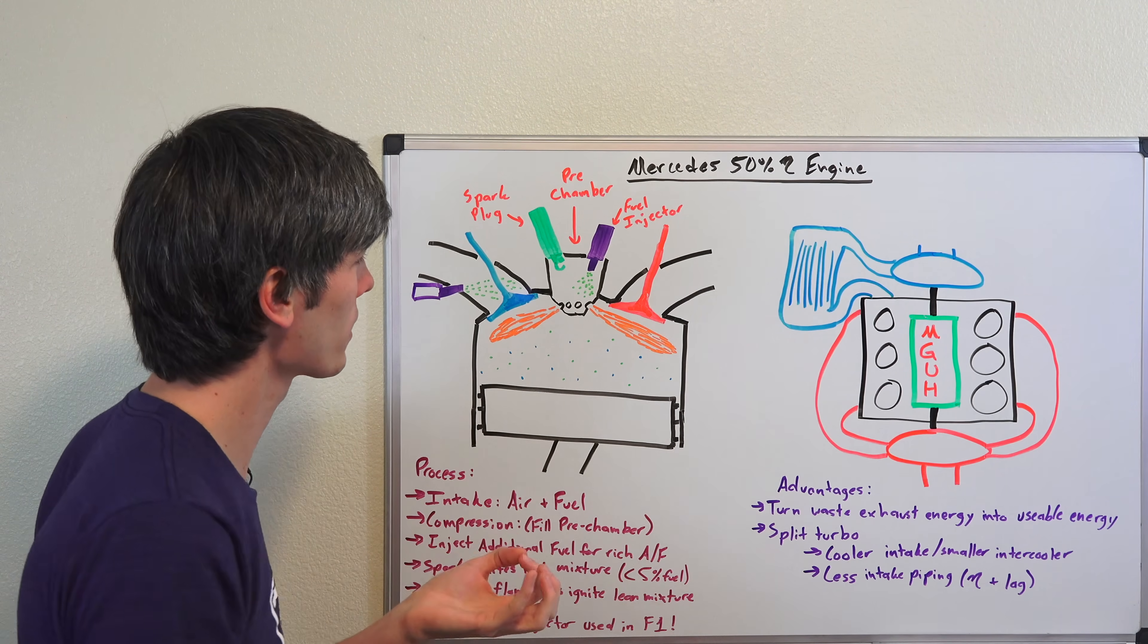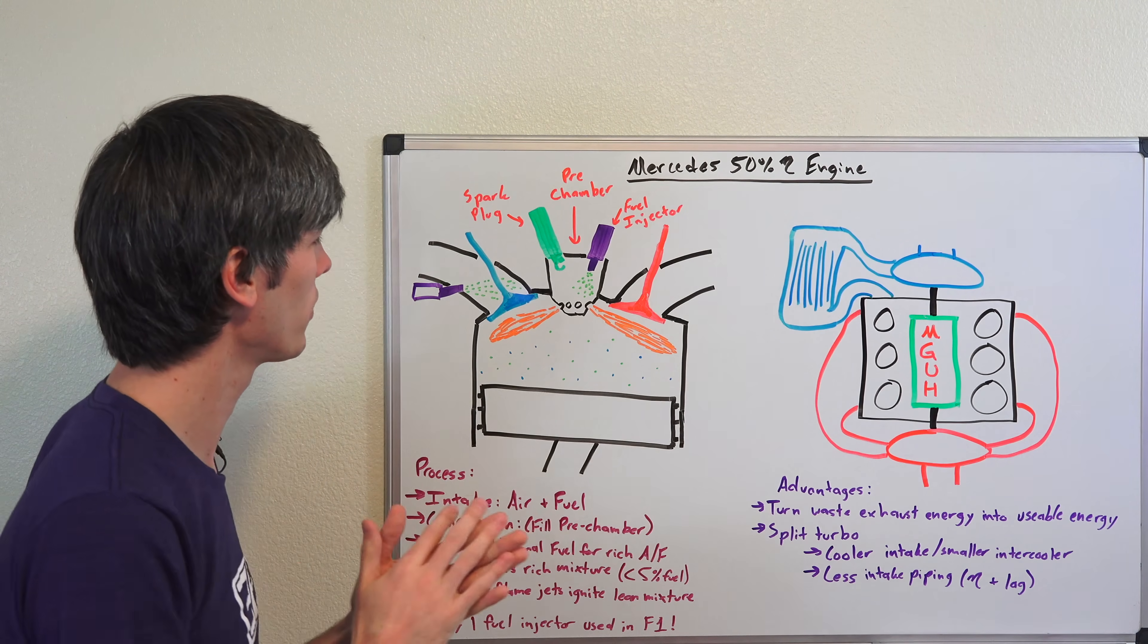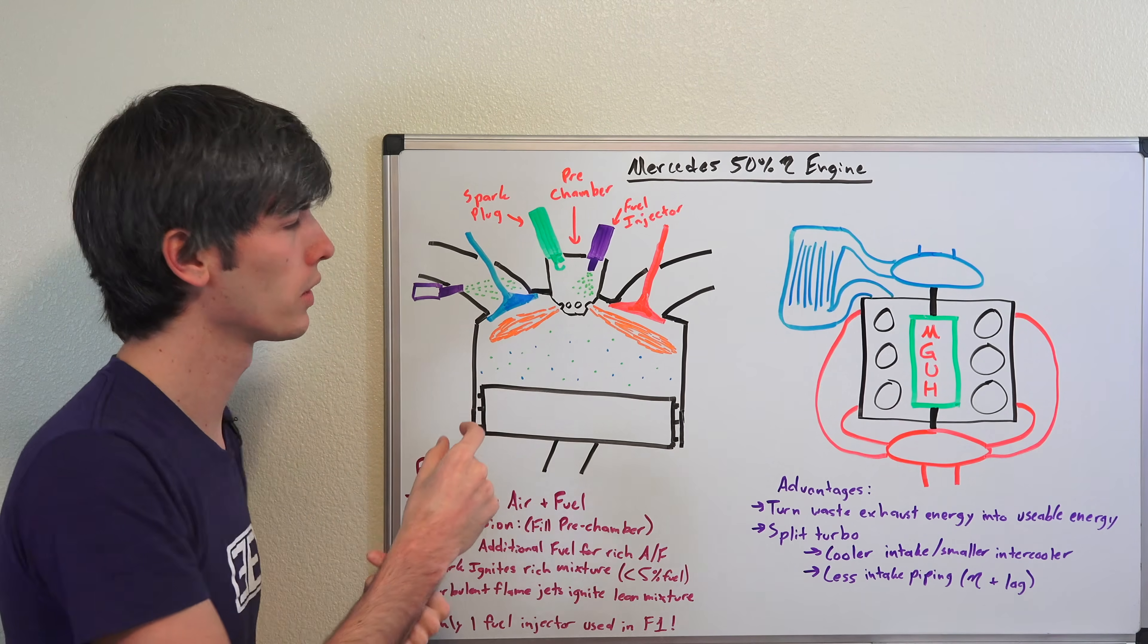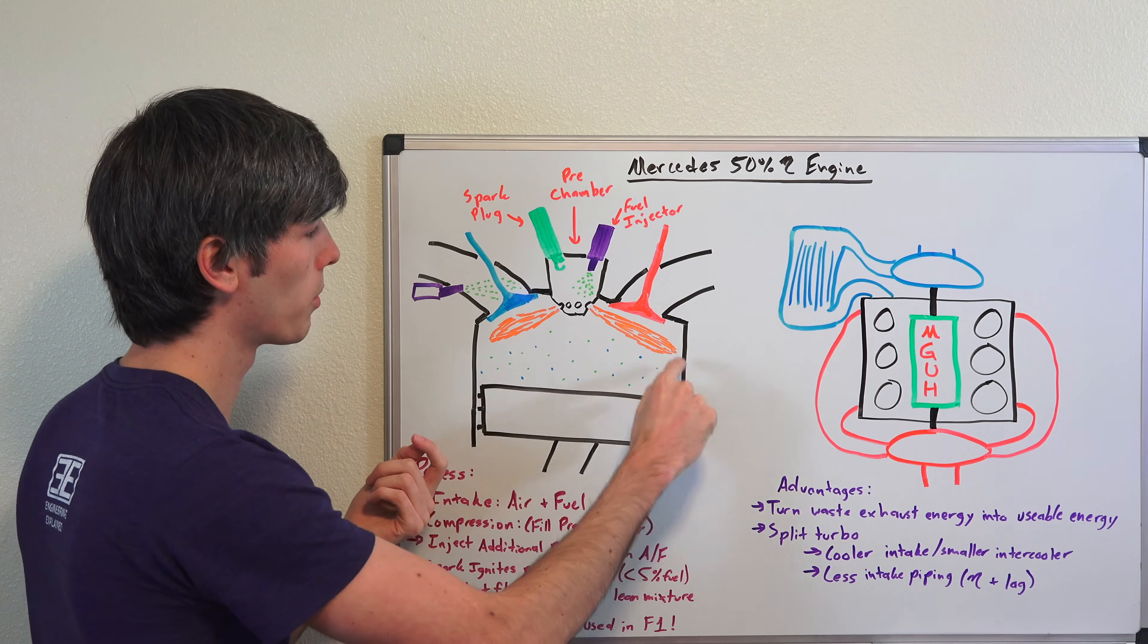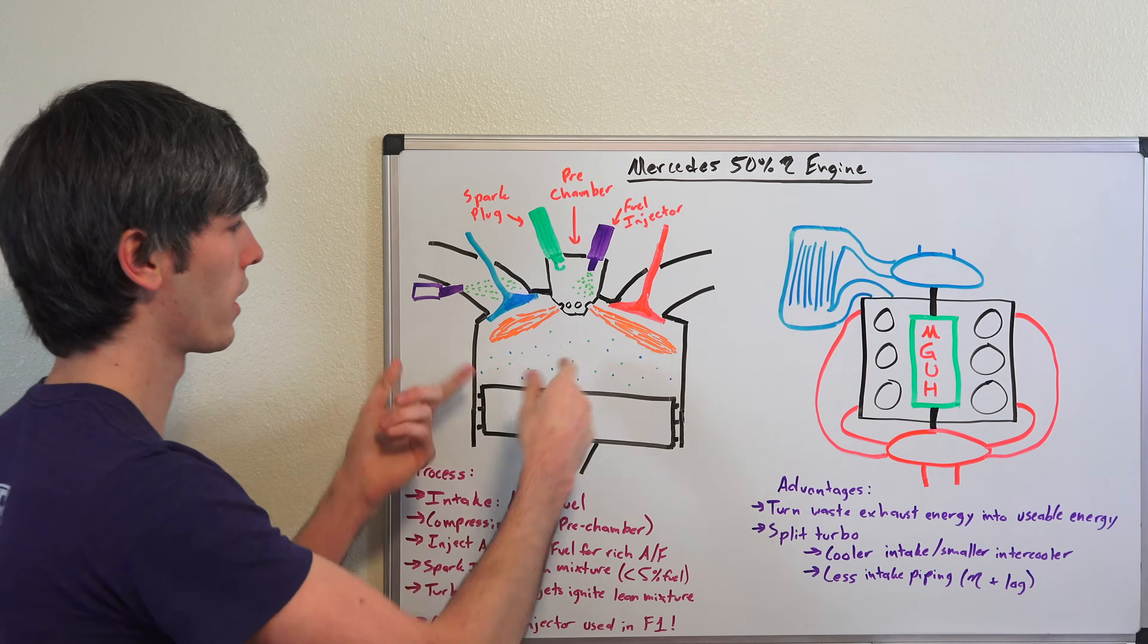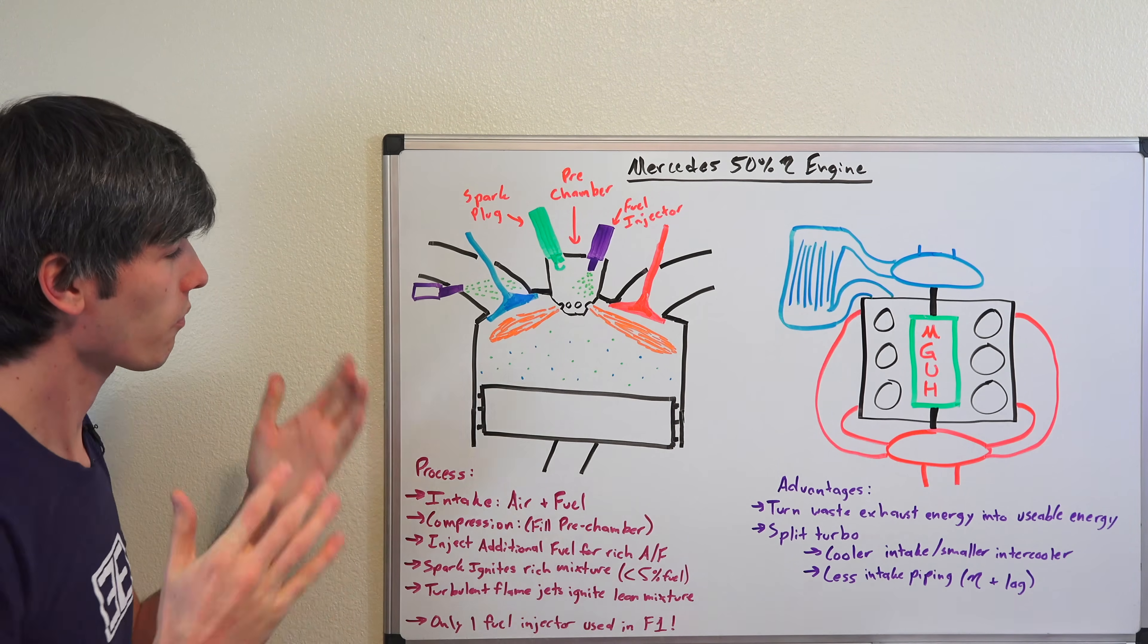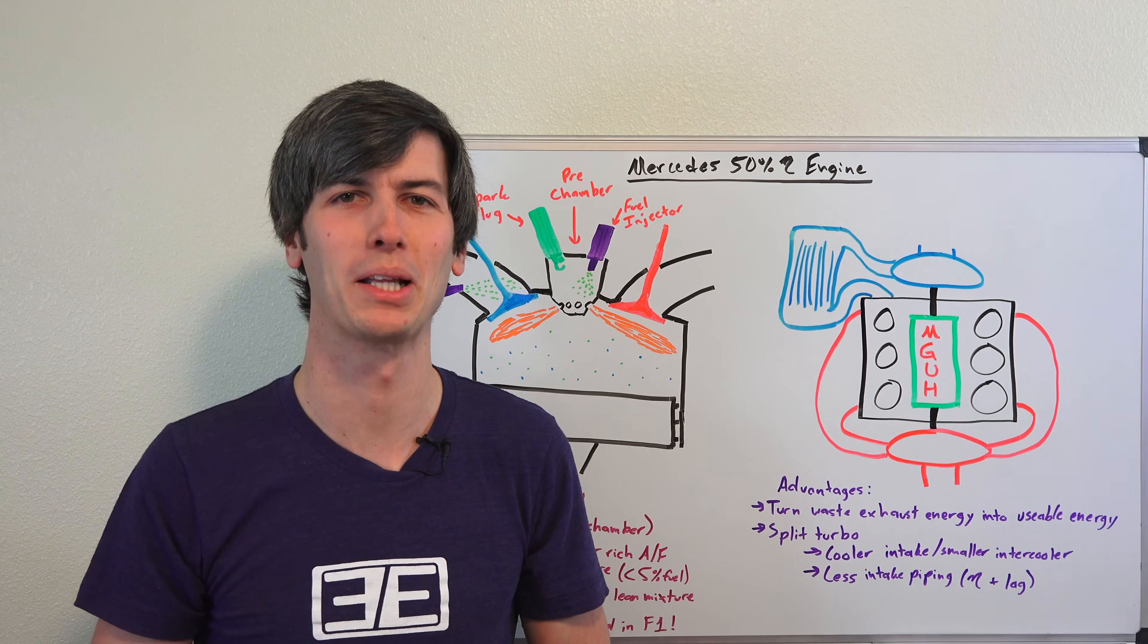But either way, that's one of the tricks of Formula 1, some of the things that go on behind the scenes that we don't exactly get to see that they have mastered is using a single fuel injector and being able to change the ratio, the air fuel ratio between the main combustion chamber and having a richer air fuel mixture within this pre-combustion chamber which then ignites the rest of it. Part of the magic of F1, super cool stuff. Hopefully you guys have enjoyed this video. If you have any questions or comments, feel free to leave them below.